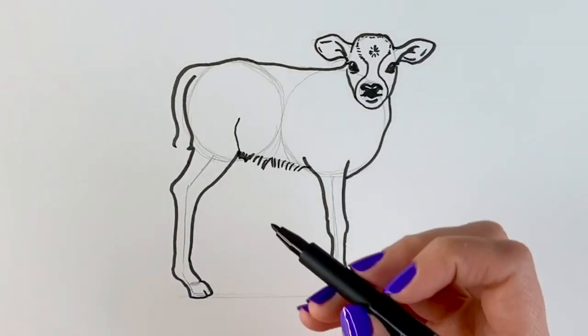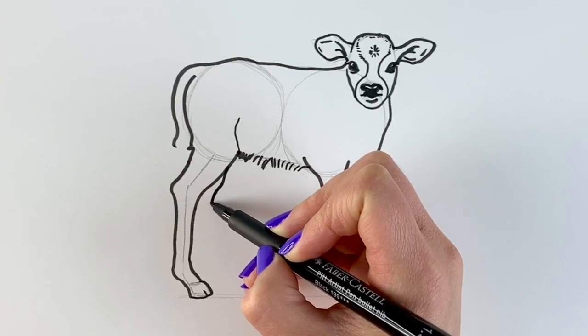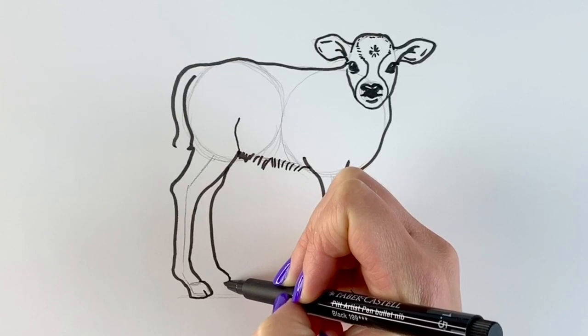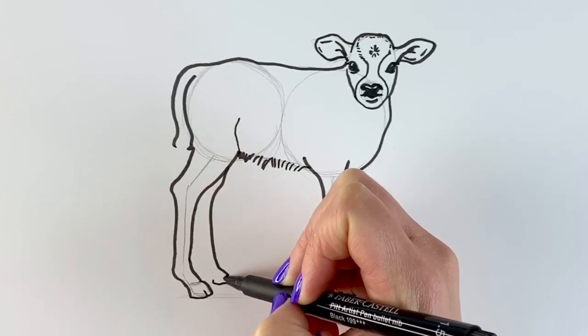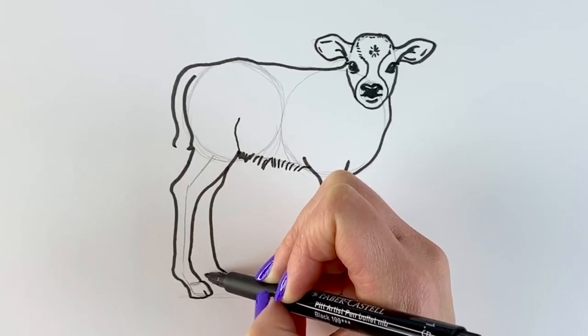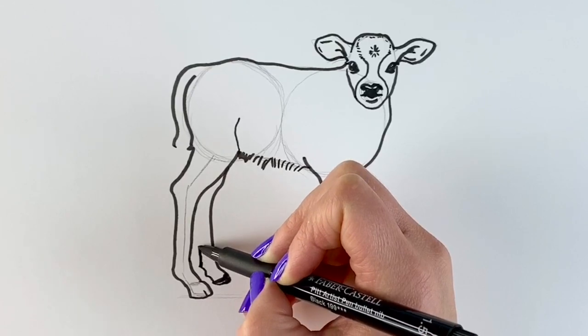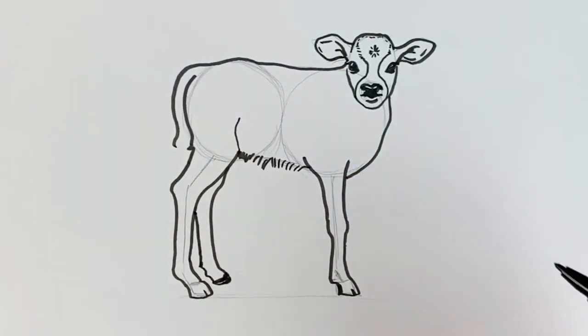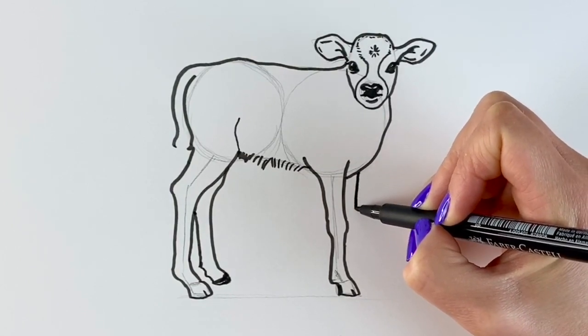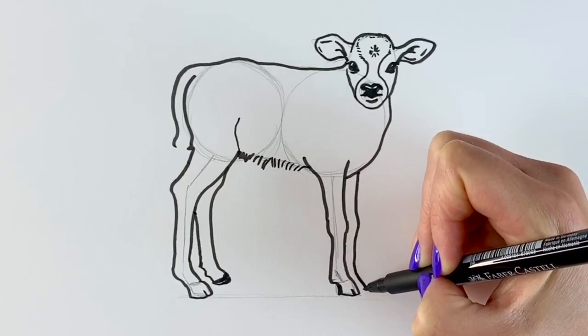Now for the other hind leg. This one's just peeping out from behind this one. It's going to go down. Just like that. Okay. And then the back of it. And up. And then the same for the front leg. So this one's peeping out from behind this front one. Goes down. And then the other hoof.